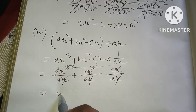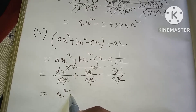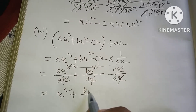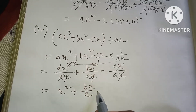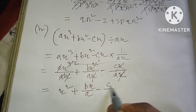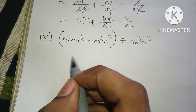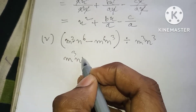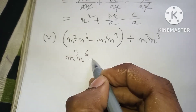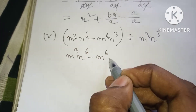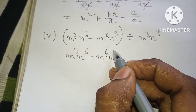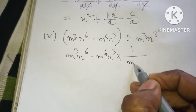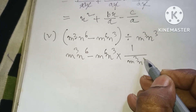Result: by A minus C by A. Number 5: m to the power 3 n to the power 6 minus m to the power 6 n to the power 3, into 1 by m to the power 3 n to the power 3.